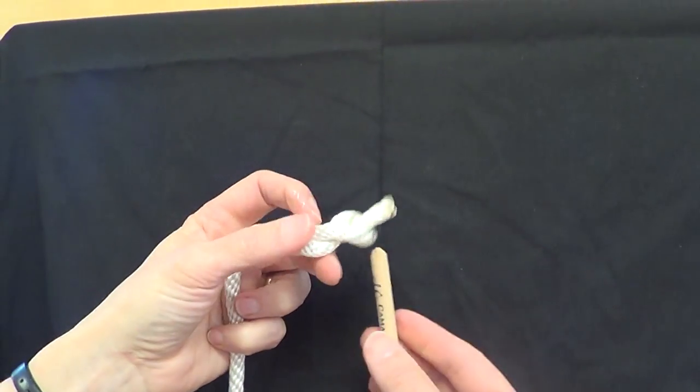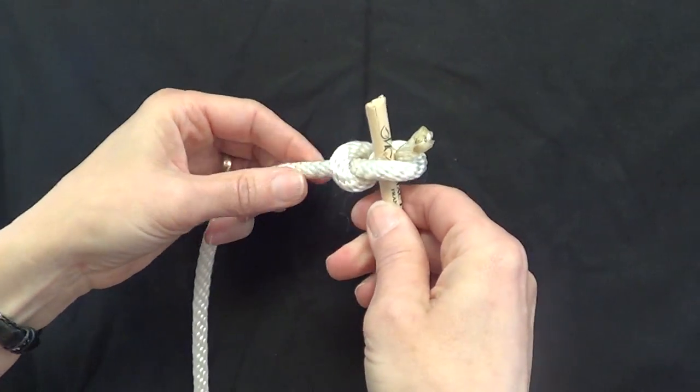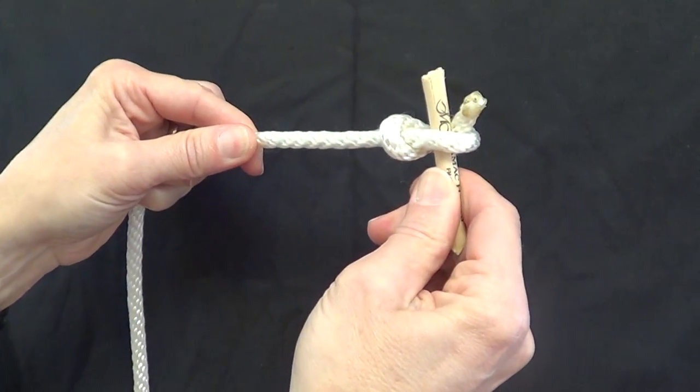I'm going to take my string anchor, and poke it through the farthest out loop, and pull it tight.